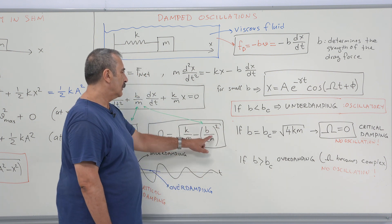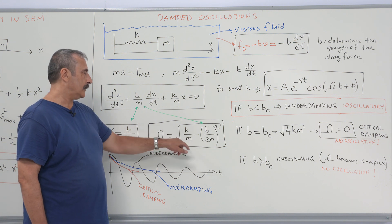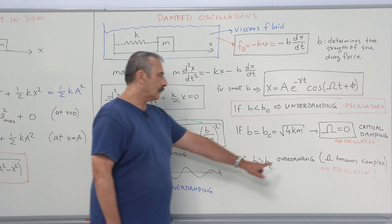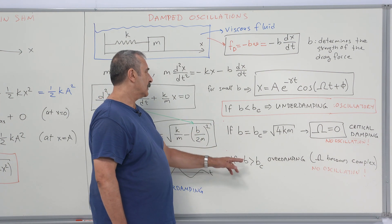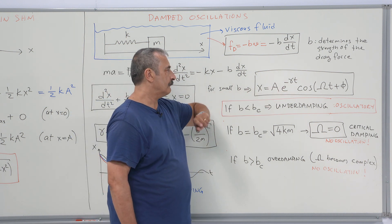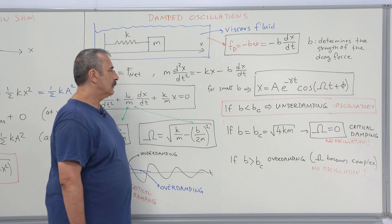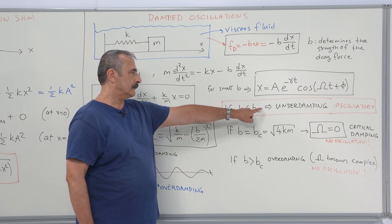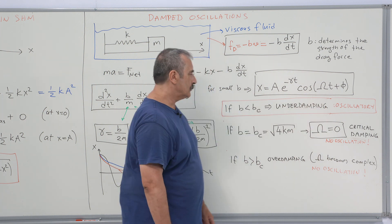If one further increases b, the inside of the square root becomes negative and we have a complex angular frequency. A complex angular frequency means the solution involves hyperbolic functions, and the physical solution gives exponential decay with no oscillation. This regime is overdamping. If b is smaller than the critical value — underdamping — we observe an oscillatory solution.